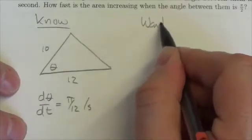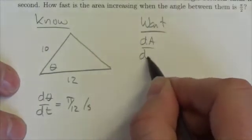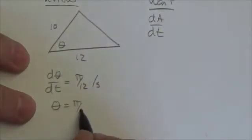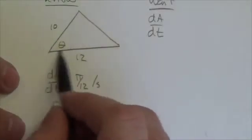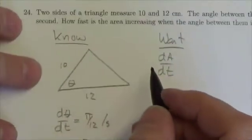What I want is I want to know how fast the area is changing when the angle between them is specifically π/2. So what I need is some sort of relationship between the area and that angle right there.